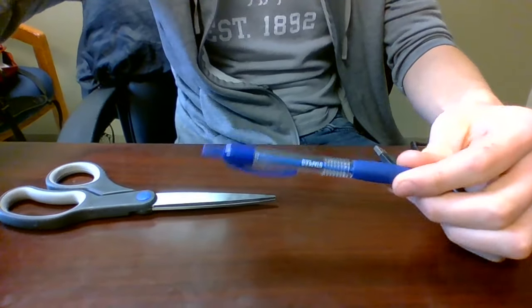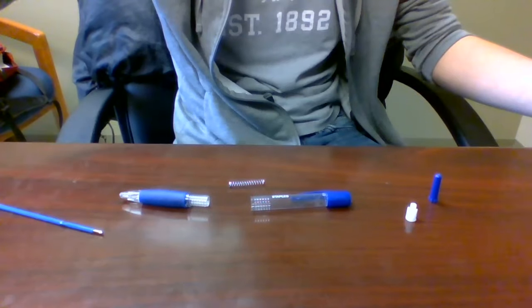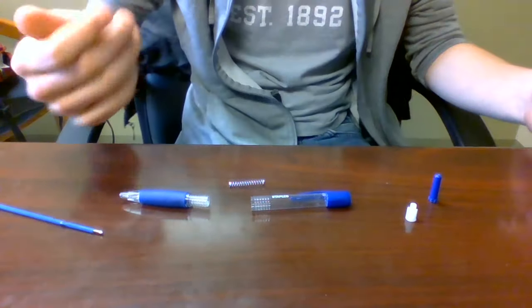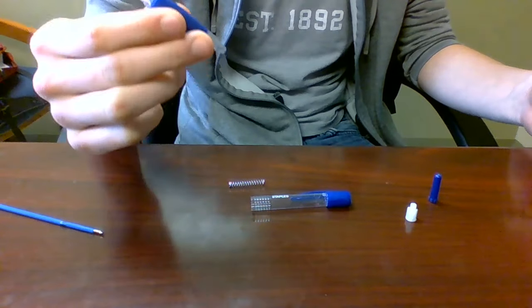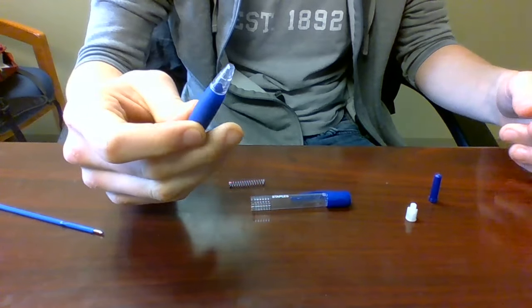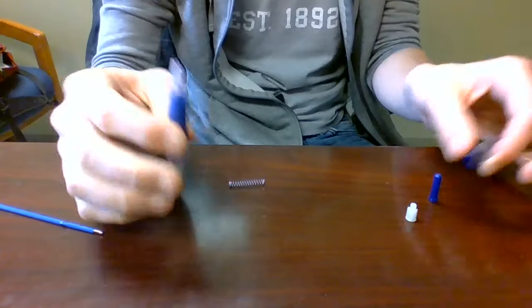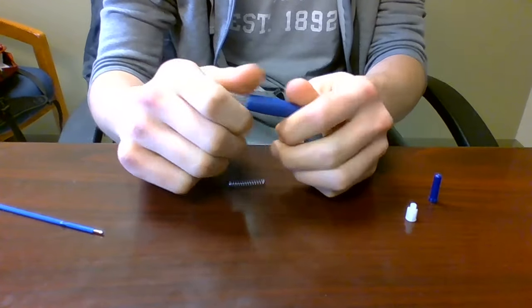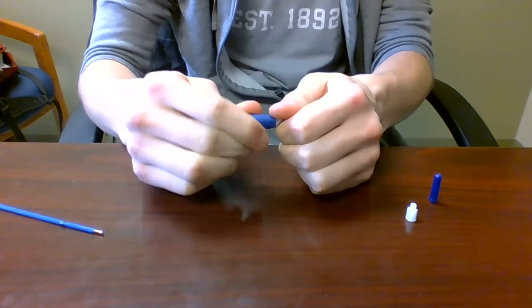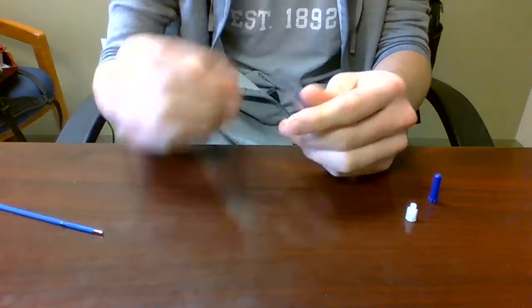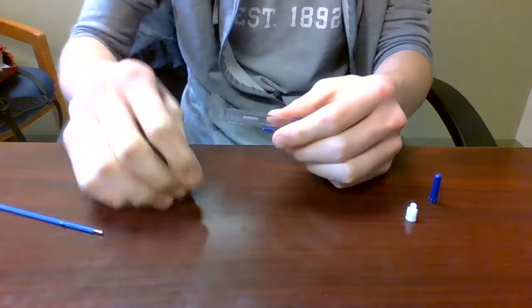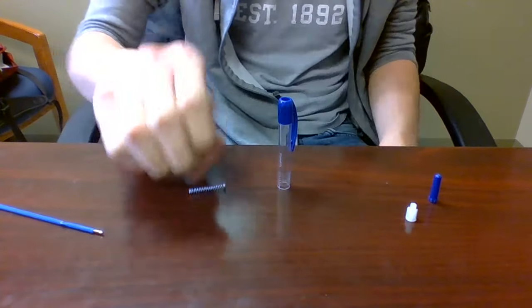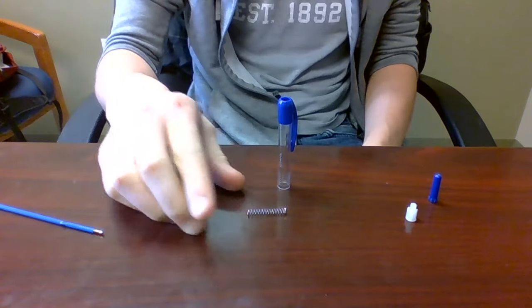Alright, so once you've got your pen taken apart, all you're really going to need is this part or this. It doesn't matter. Whichever one. I'm going to be using this part. Just, actually, I'm going to be using this part only because it's longer. So, it really does not matter either way. And I just dropped my spring. It really does not matter either way. You're going to need this. Your spring. And nothing else.